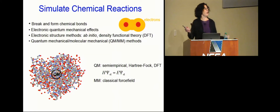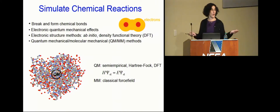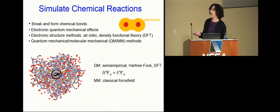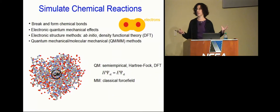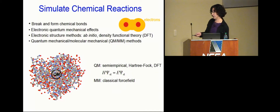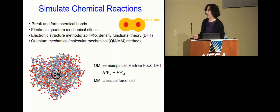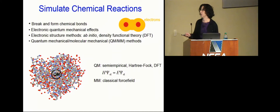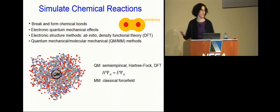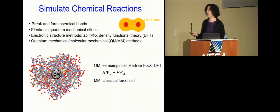In a hybrid QM/MM approach, for a protein you define a QM region where the action is happening — bonds breaking and forming — and do electronic structure there, using Hartree-Fock, DFT, or whatever is needed. The rest of the system uses standard molecular mechanical classical force fields. Why waste time doing high-level calculations where there's no bond breaking anyway? This gives us the best of both worlds through a hybrid quantum-classical method.